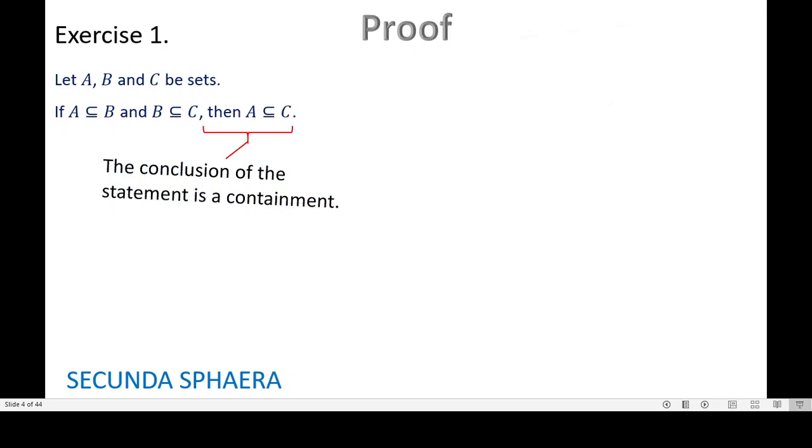One important thing to keep in mind is to look at the conclusion of this statement. The conclusion of this statement is a containment. That means that we need to prove a property for a general element of set A. Keep this in mind because this is very important for the very beginning of the proof.